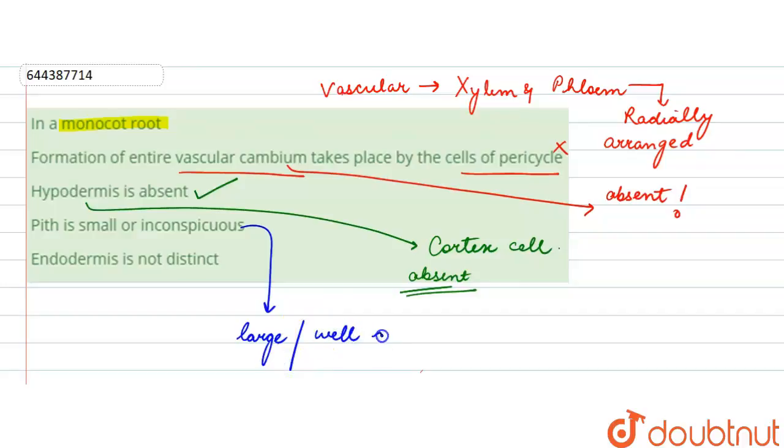The last one says endodermis is not distinct. Now endodermis in monocot roots is quite distinct, that is, it can be distinguished quite easily. It is well developed, so this statement is also wrong. So the only correct statement is that hypodermis is absent. Thank you.